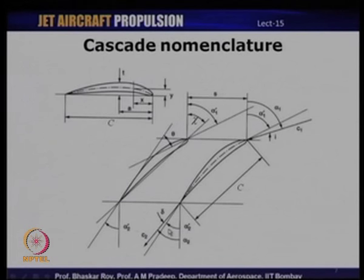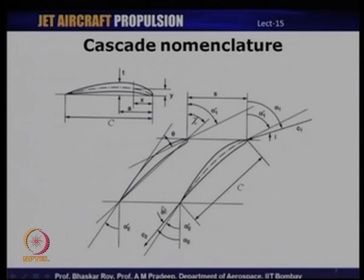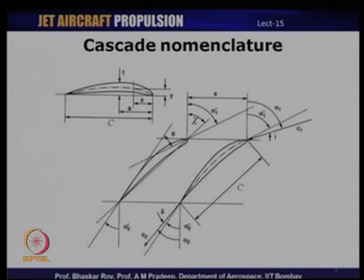At the exit we have c2, which is the exit flow velocity leaving the blade trailing edge at an angle alpha 2, and the blade outlet angle is alpha 2 prime. Alpha 2 and alpha 2 prime may not be the same — just like we had an incidence at the inlet, if they are different it means there is a certain deviation, represented here by delta. So deviation is basically equal to alpha 2 minus alpha 2 prime. We have incidence at the inlet and deviation at the outlet. As you rotate the turntable we can change this incidence angle and set it at desired values to see how these blades perform as you keep changing incidence.